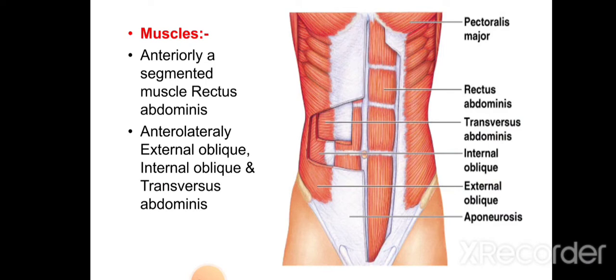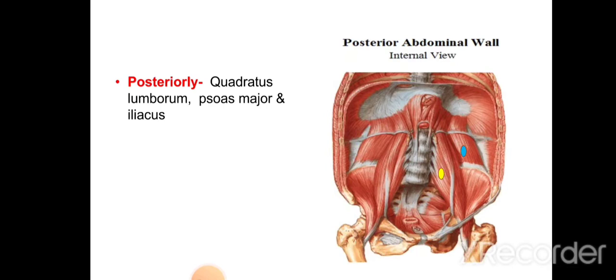The muscles of the anterior abdominal wall are the external oblique, internal oblique, transversus abdominis, and rectus abdominis. The muscles of the posterior abdominal wall include psoas major (yellow dot), quadratus lumborum (blue dot), and the iliacus muscle originating from the iliac fossa.